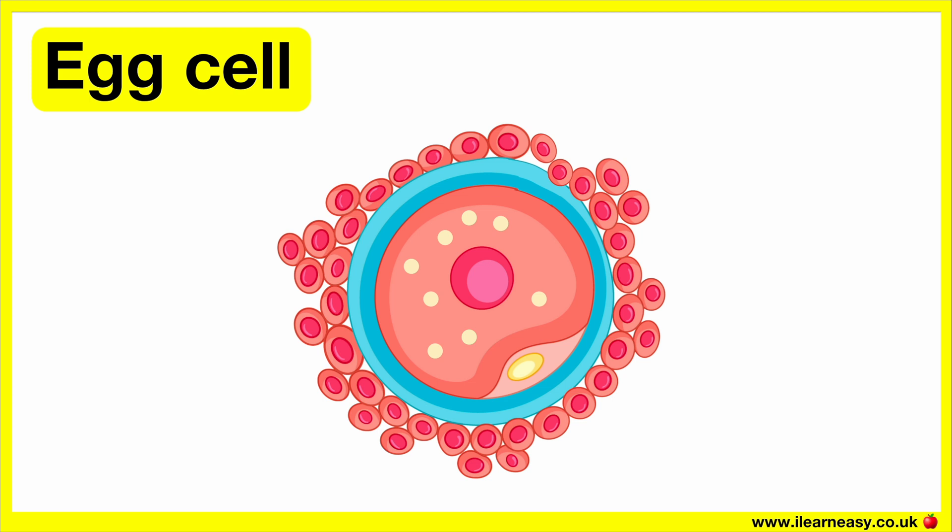Now let's look at the different parts of an egg cell. An egg cell is also known as an ovum. A human egg cell is big and spherical in shape. It contains 23 chromosomes. The egg cells contain the organelles required for the fertilised egg to develop into an embryo and then eventually a human. It's approximately 130 micrometres in diameter. On average, a woman releases just one egg per month.